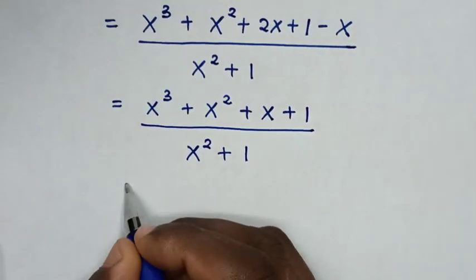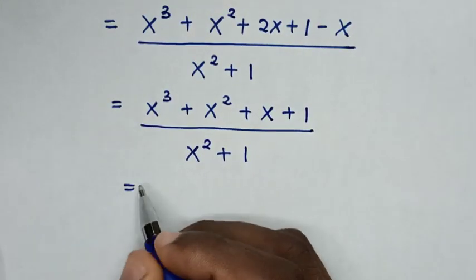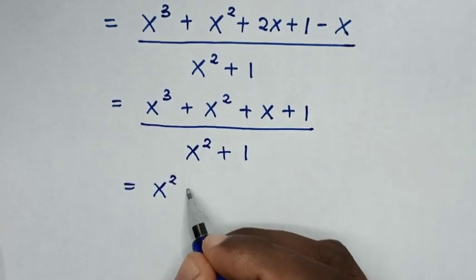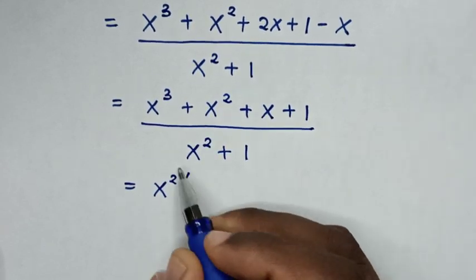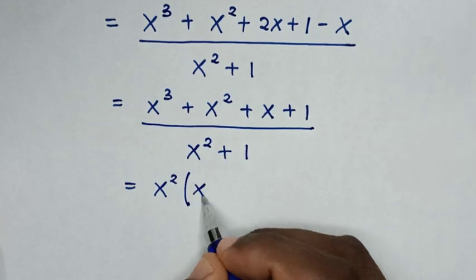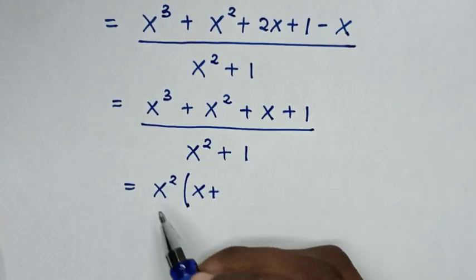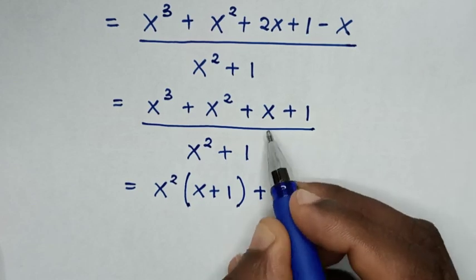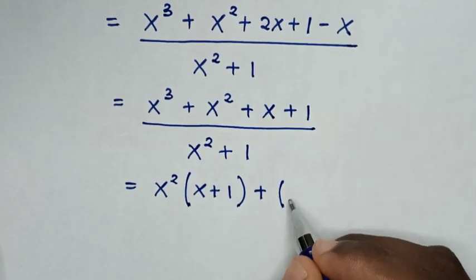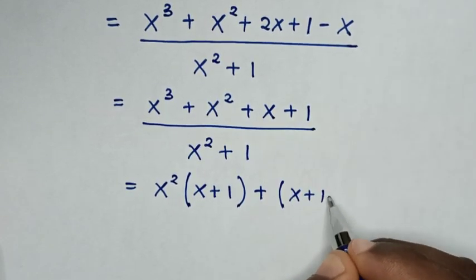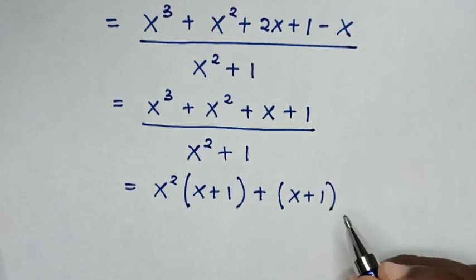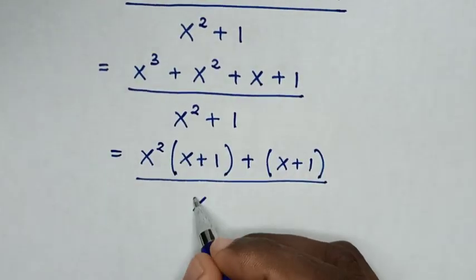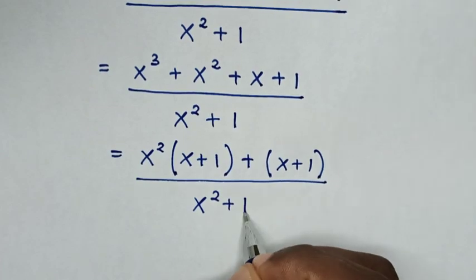Then in the next step, in here x squared is common, so we take x squared out of the bracket. This divided by x squared is (x plus 1), this divided by x squared is 1. Then plus (x plus 1), so bracket (x plus 1), over x squared plus 1.